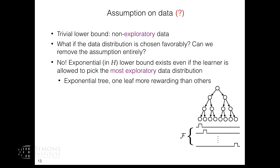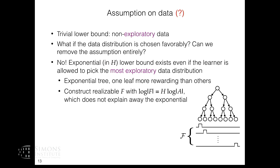Here is the proof sketch. You construct an exponential tree such that one of the leaves is more rewarding than all others — like a multi-armed bandit with exponentially many arms. Without further assumptions, you must suffer exponential-in-horizon sample complexity. You can construct a realizable F that is small, such that the logarithmic size of F doesn't explain away the hardness. Even stronger assumptions on the function class are easy to satisfy in this exponential tree example.